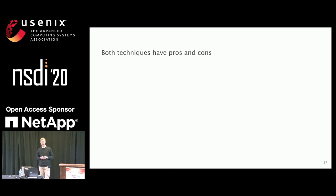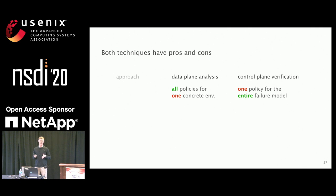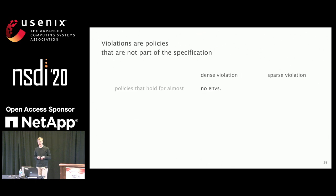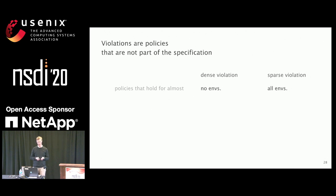Both techniques have advantages and disadvantages. In data plane analysis, for one environment, you can find all the policies that hold. In control plane verification, for all environments, you can find whether one policy holds. To better articulate their strengths, I need to introduce the term 'violation' — a policy which is not part of the specification because some concrete environment within the failure model violates it. We have two types: dense violations and sparse violations. A dense violation is a policy that holds for almost no concrete environment within the failure model.